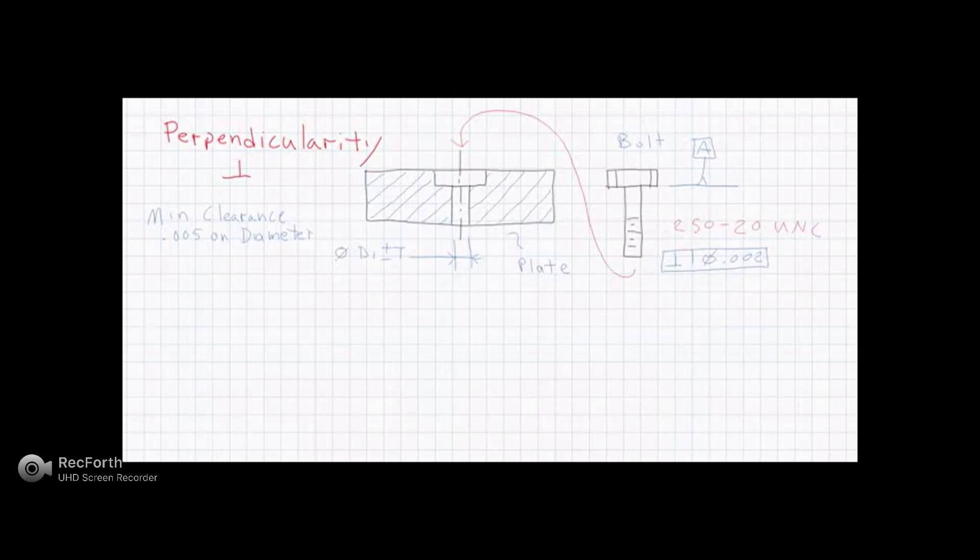Here we have a perpendicularity example. Specifically, what we're wanting to do is control a hole feature such that a fastener bolt at a very specific size and geometric tolerance will fit into that bolt under a certain installation requirement, and that just happens to be a minimum clearance of 5,000ths on diameter.